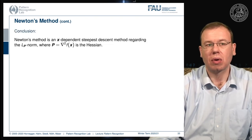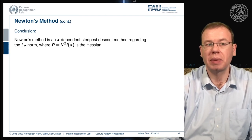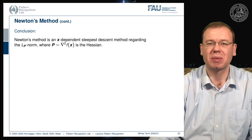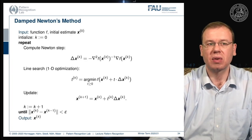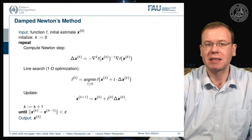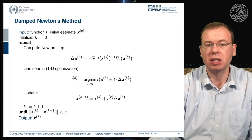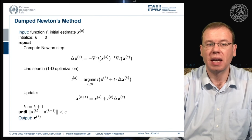Newton's method is an x-dependent steepest descent method with respect to the LP norm where P is simply the Hessian matrix — a nice observation. This leads to the damped Newton's method: given a function f and initial estimate x₀, we set k=0, compute the Newton step as −H(xₖ)⁻¹ ∇f(xₖ), perform a line search, update xₖ, and iterate until changes are small.